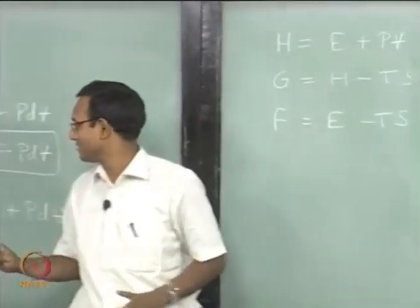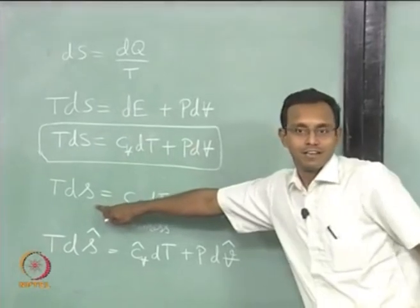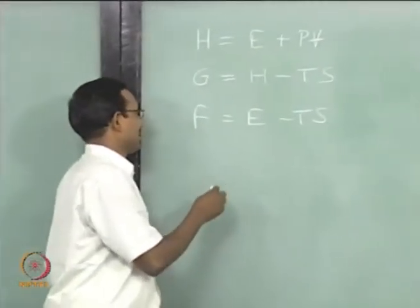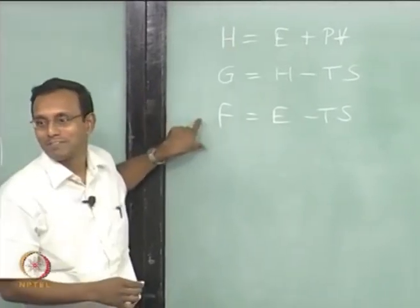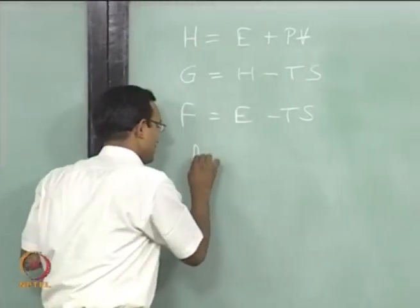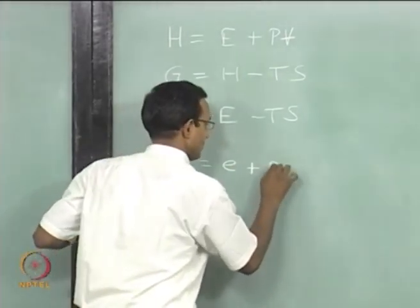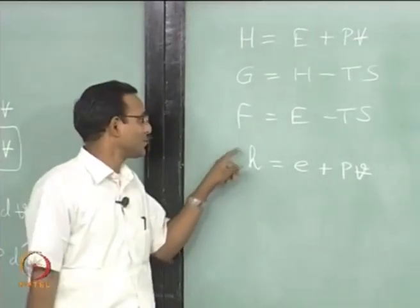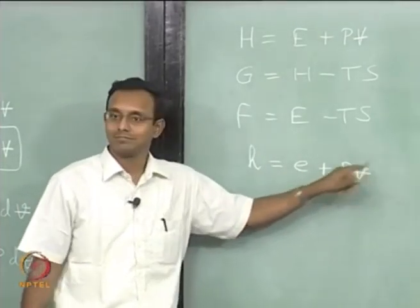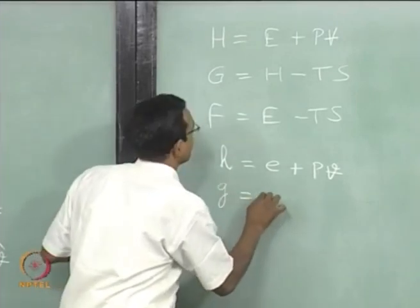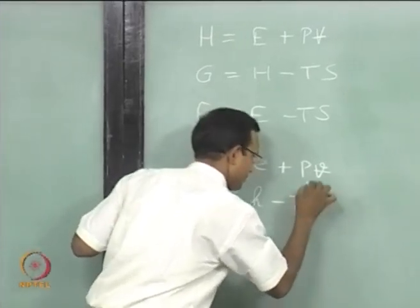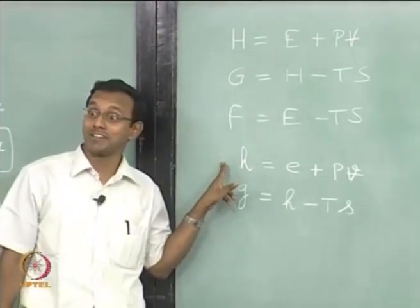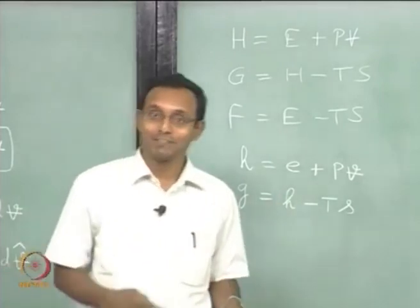Using the same convention, capital letters become lowercase for intensive per-mass quantities, and capped letters for per-mole quantities. For enthalpy: small h equals e plus Pv on a per-mass basis. In gas dynamics, we predominantly use H equals E plus PV since it involves flowing gas — an open system — where enthalpy is always needed.